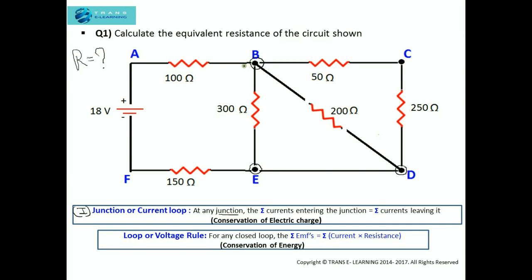A junction is a circuit point at which current divides. You can see here that the current is entering this junction and it is getting divided into three smaller currents which I am labeling as I1, I2, and I3.